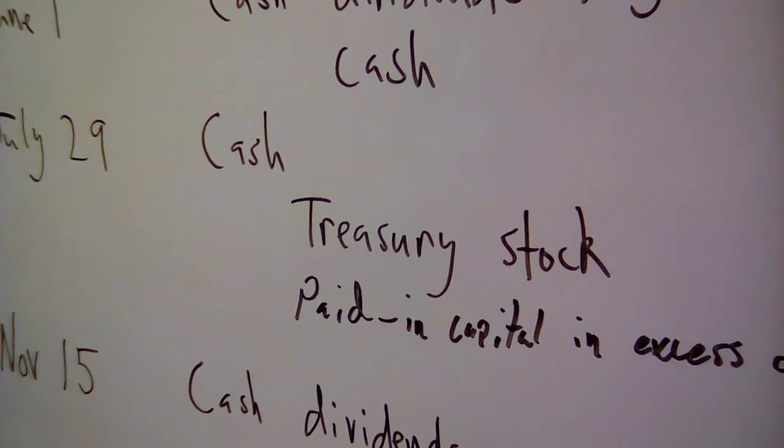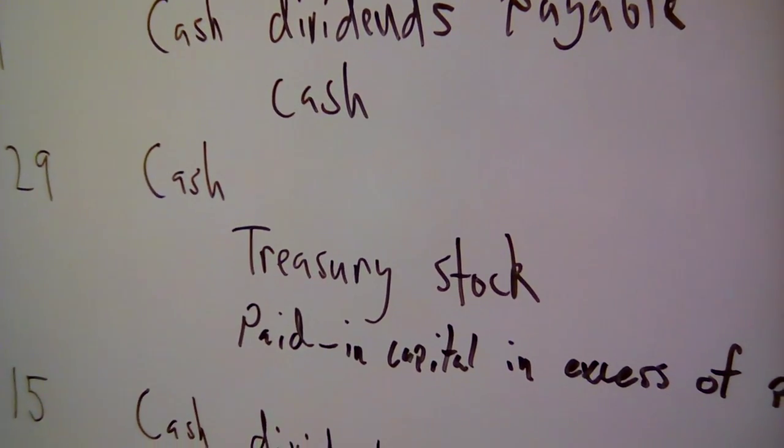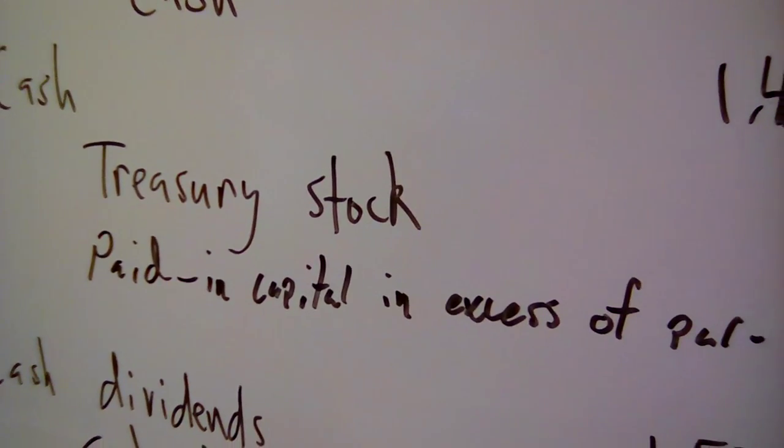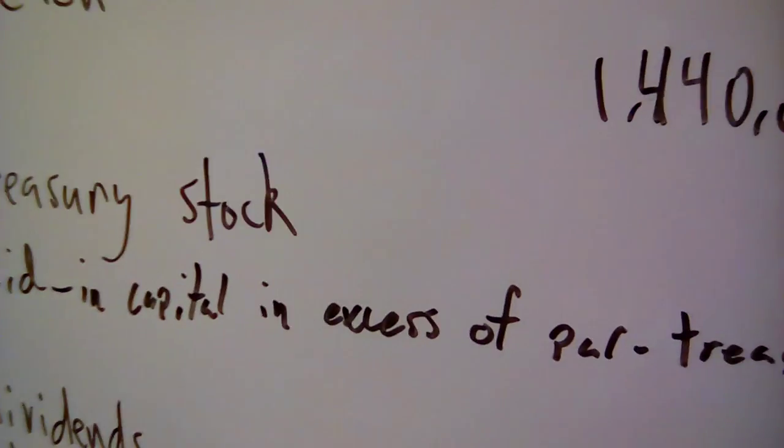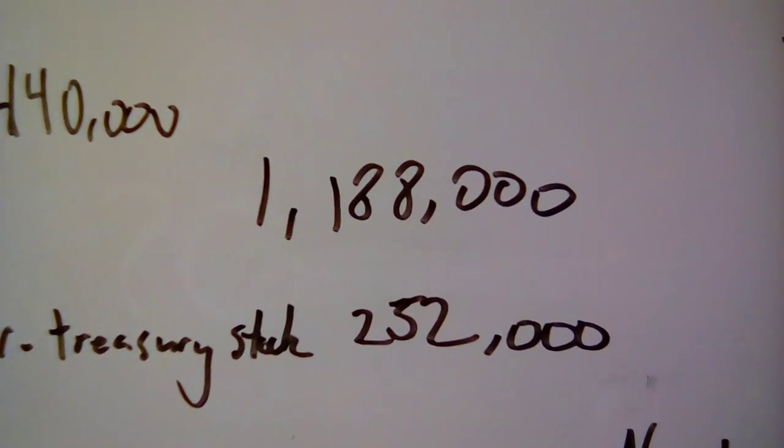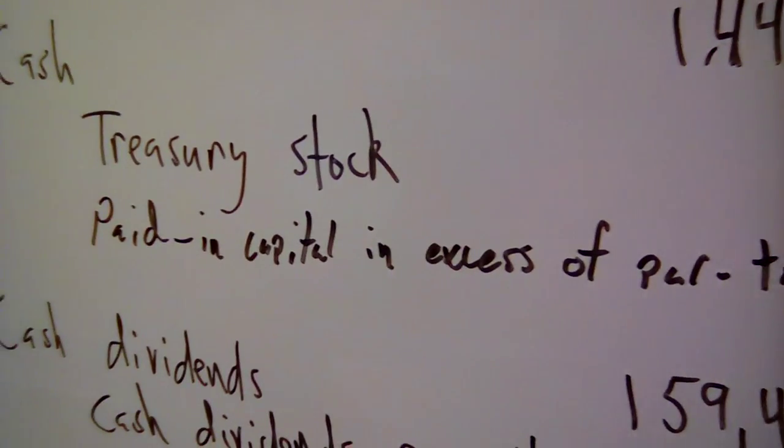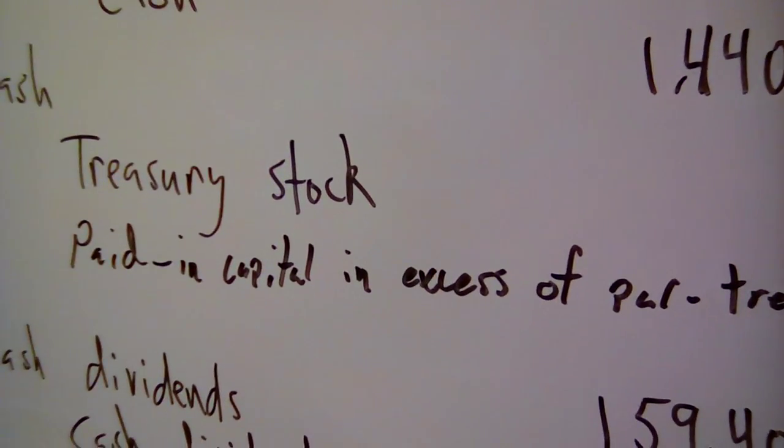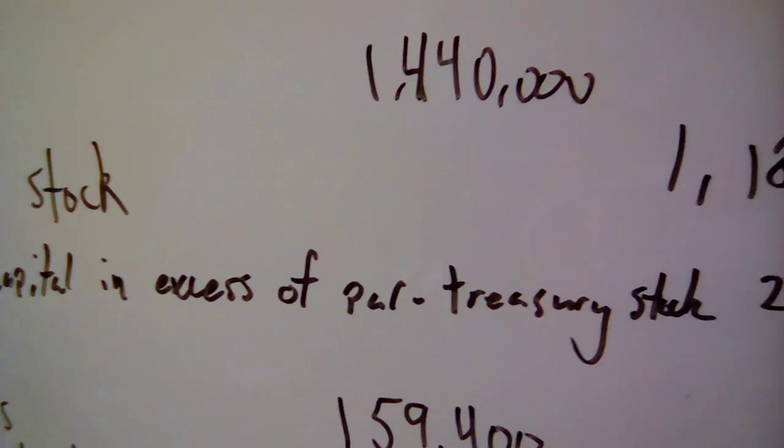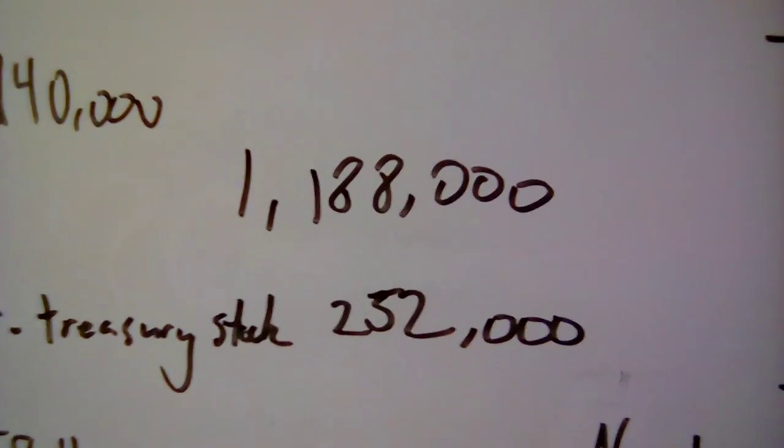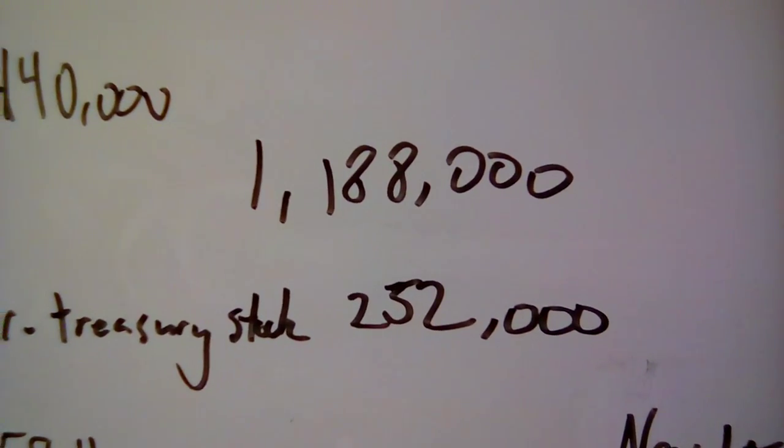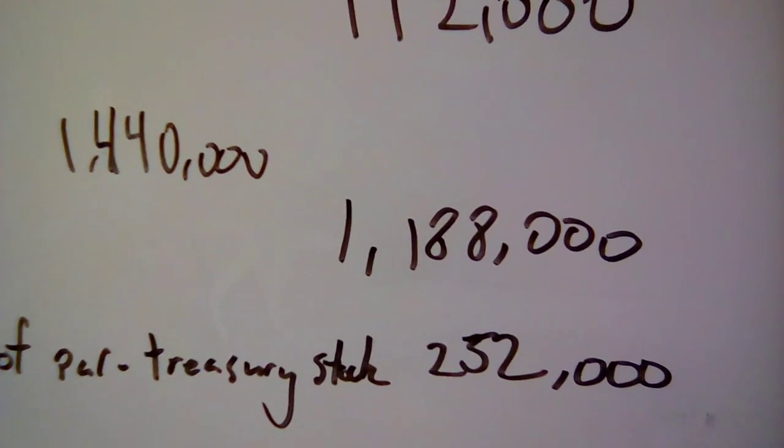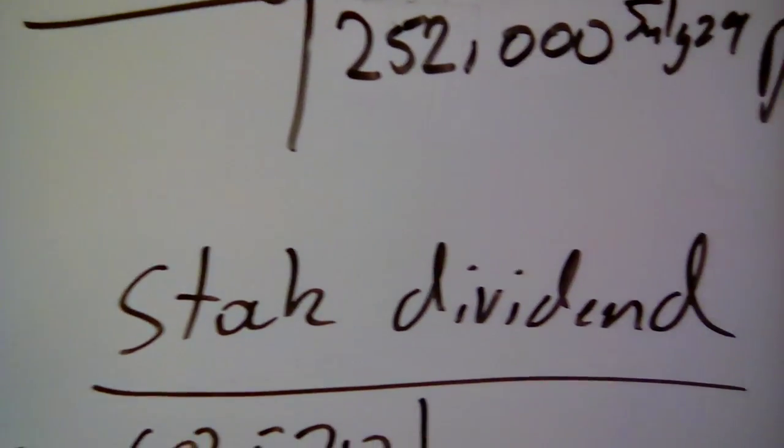Okay, and then July 29th, we sold 36,000 shares of treasury stock at $40 a share receiving cash. So we debit the amount of money we received, but here's where it changes. Treasury, we recorded at cost. So when we take it off the books, we take it off at $33 a share, which is only $1,188,000. The remaining amount, what was it, $7 over? That's paid in capital in excess of par treasury stock, which is just another equity account. It goes under the equity section of the balance sheet. This is another way a company can make money. It can buy its shares back at low price, as the share price goes up, sell the shares back, making a little extra money.